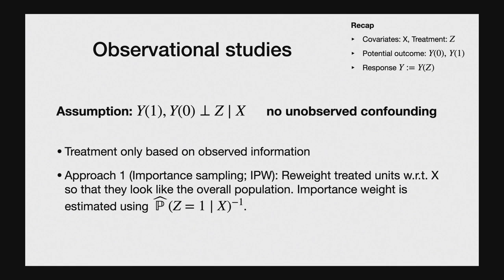Under this assumption, you can try to account for selection bias. The first approach is called importance sampling, also known as inverse propensity weighting. The problem is that treated units don't look like the entire population — people who go to museums tend to be wealthier. So you reweight the treated units using X information so they look like the entire population. The right importance weight is inversely proportional to the probability of being treated given X, i.e., the propensity score. If you can estimate this accurately using, say, logistic regression, this approach works well.